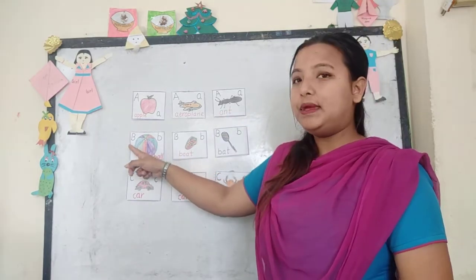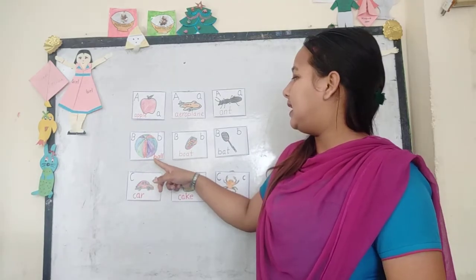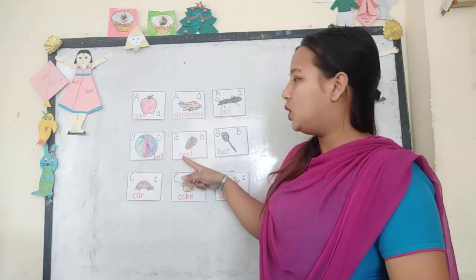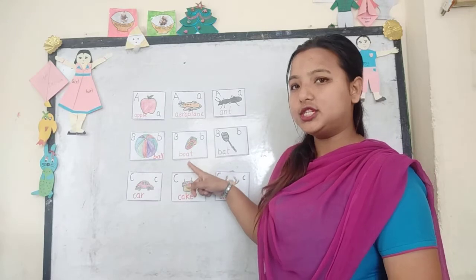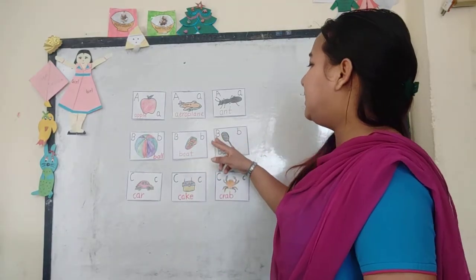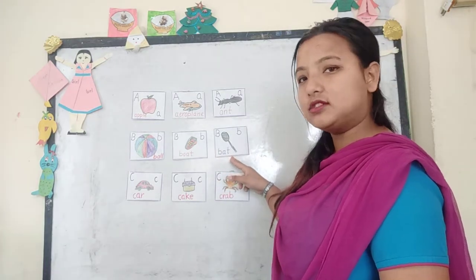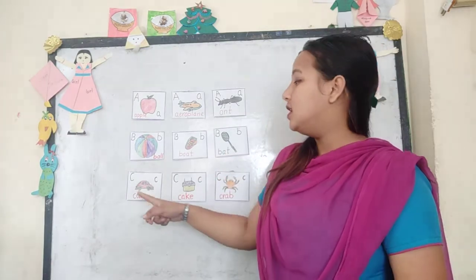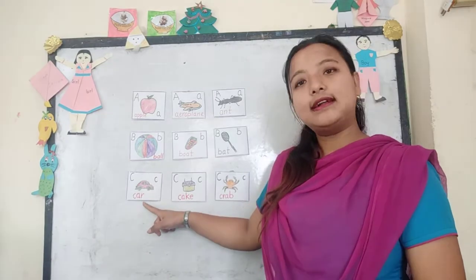B is for ball. B-A-L-L, ball. B-A-L-L, ball. B is for boat. B-O-A-T, boat. B is for boat. B-O-A-T, boat. B is for bat. B-A-T, bat. C is for car. C-A-R, car.